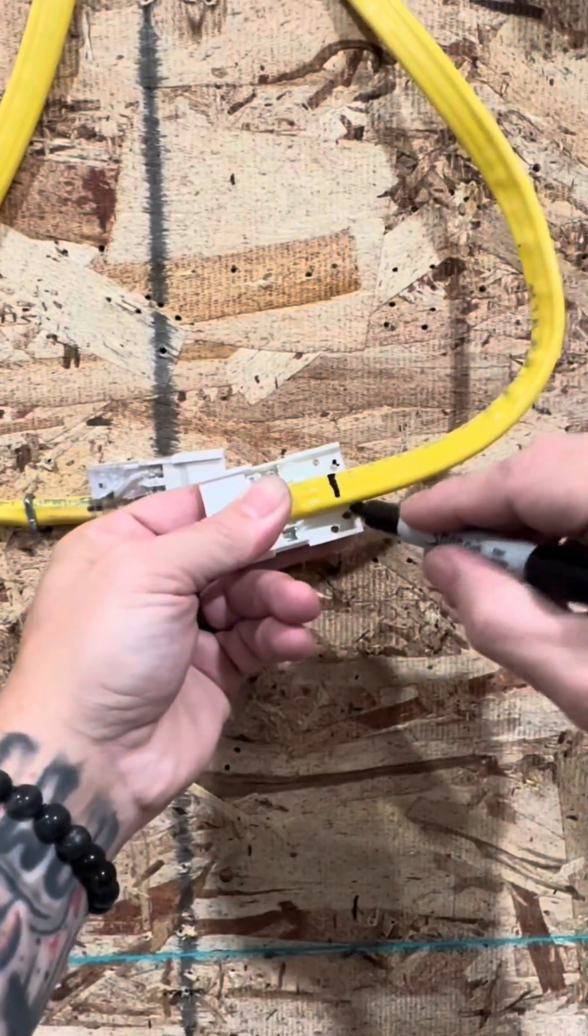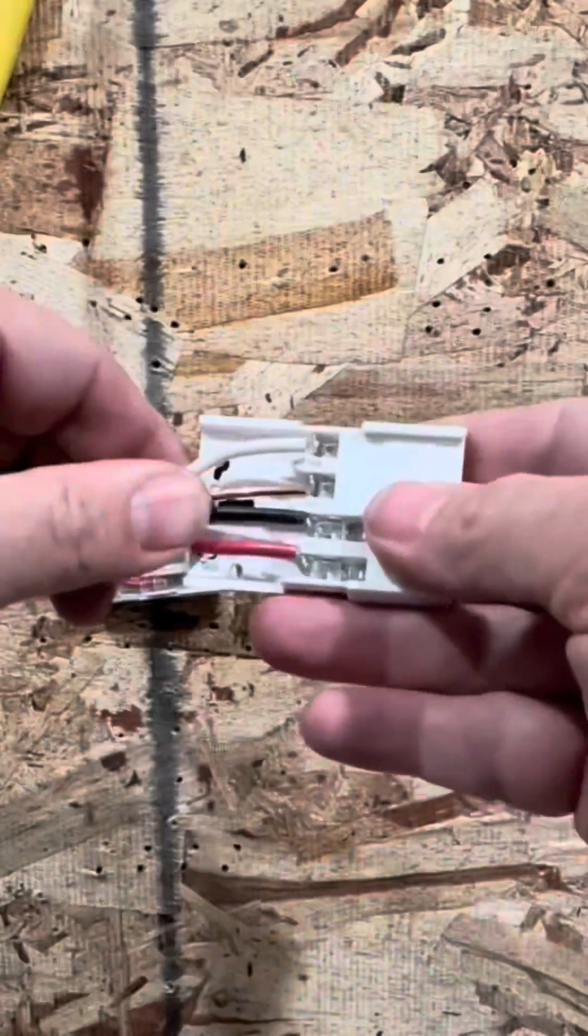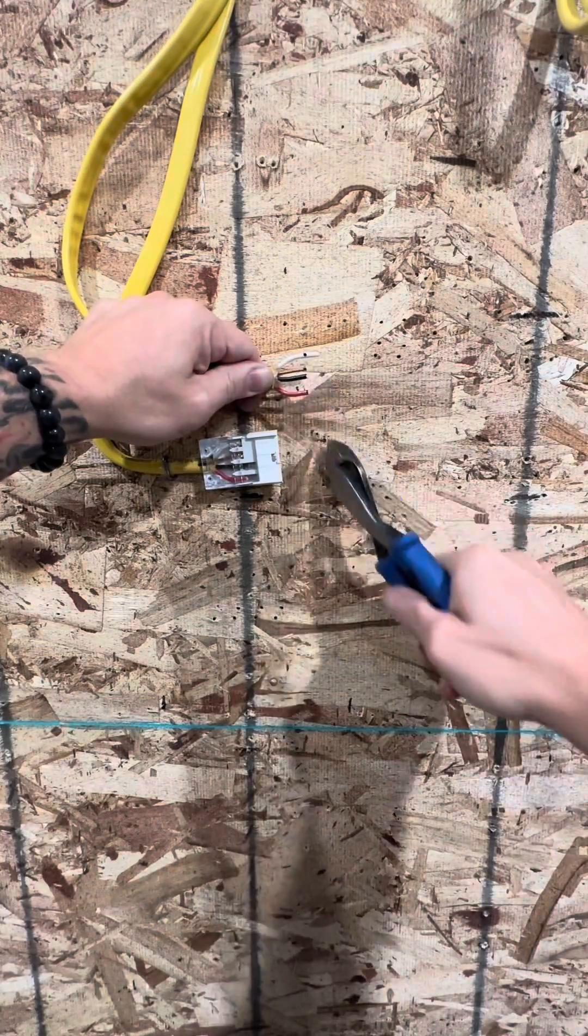Take your sharpie and mark it to length again where you want to remove that Romex sheathing. Take your knife, score it, pull it off, clean it up with your strippers, mark the wires to length, and take your side cutters.